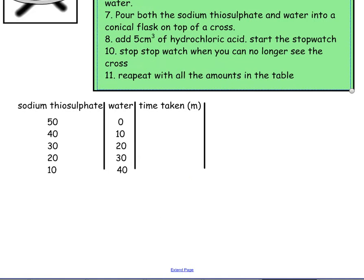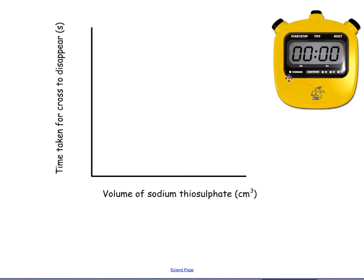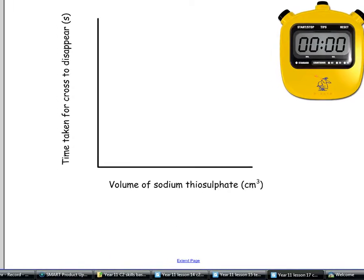If I then plotted the results, here's a nice stopwatch to look at. If I then plotted those results, let me just move the frame a sec, then I would end up with a graph that if the volume was really low, the time taken would be very slow, and you'd end up with this sort of downward trend.